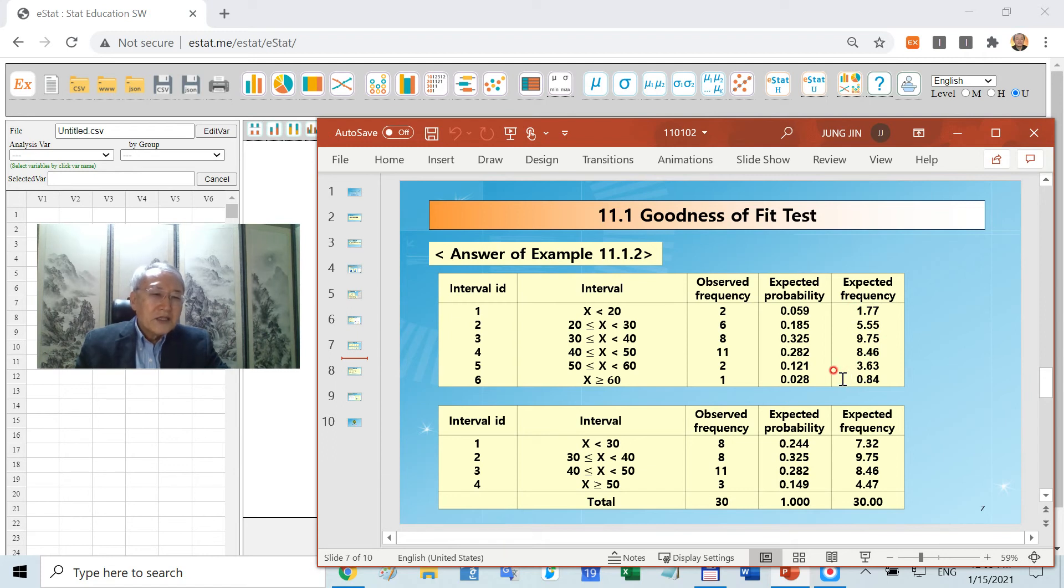But to apply chi-square test, goodness of fit test, you need the expected frequency to be greater than five. Therefore, we combine the first two intervals and the last two intervals. Now you're ready to apply the goodness of fit test. It's the same as the previous section for categorical data.